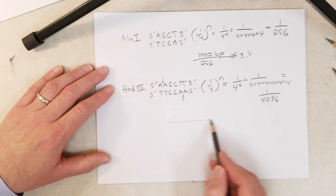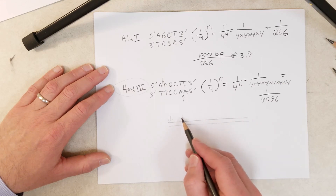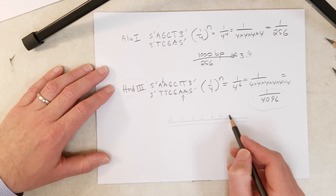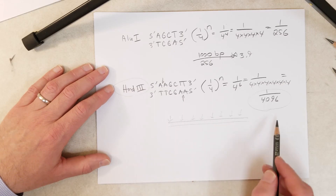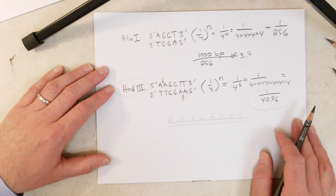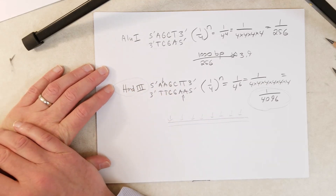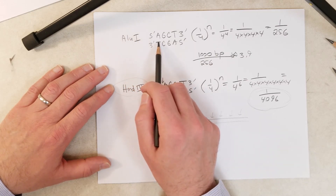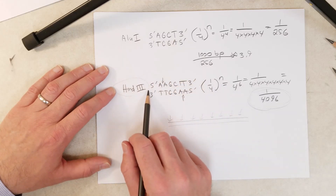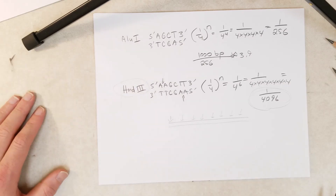We don't know where it would cut. Let's say this is our DNA — it's 4,000 base pairs long — we would expect it to cut one time, but who knows where. This is just a prediction based on likelihood, and it requires the DNA molecule's sequence to be completely random. It will cut one time, but it could cut two times or no times. This formula is just an estimation. The key concept is that a four base pair cutter should cut a DNA molecule many more times than a six base pair cutter, which should cut more times than an eight base pair cutter.